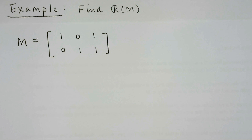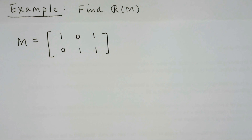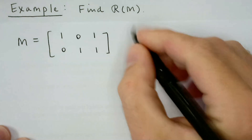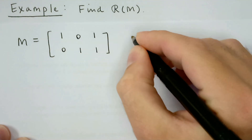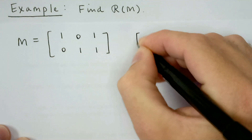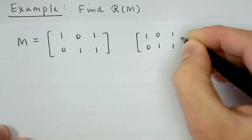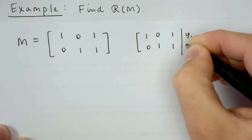For another example, I've got this matrix M, which is again relatively simple, but this is a wide one. We're going to find the range of M. Thinking about the possible combinations of the columns, those columns all have two components, so combining them gives a column of two components. I'm going to augment M with Y and row reduce: the matrix is [1, 0, 1; 0, 1, 1] augmented with y₁ and y₂.